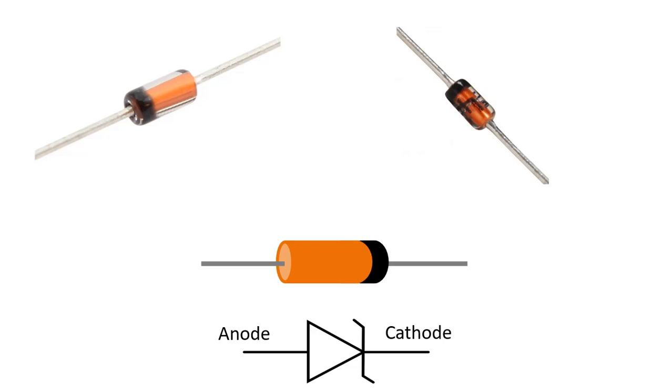When the reverse voltage is removed, the Zener diode returns to its normal state. Since Zener diodes work in reverse polarity, they are reverse connected to the circuit. The braking stress value is determined by adjusting the amount of additive at the production stage. The symbol is like this.